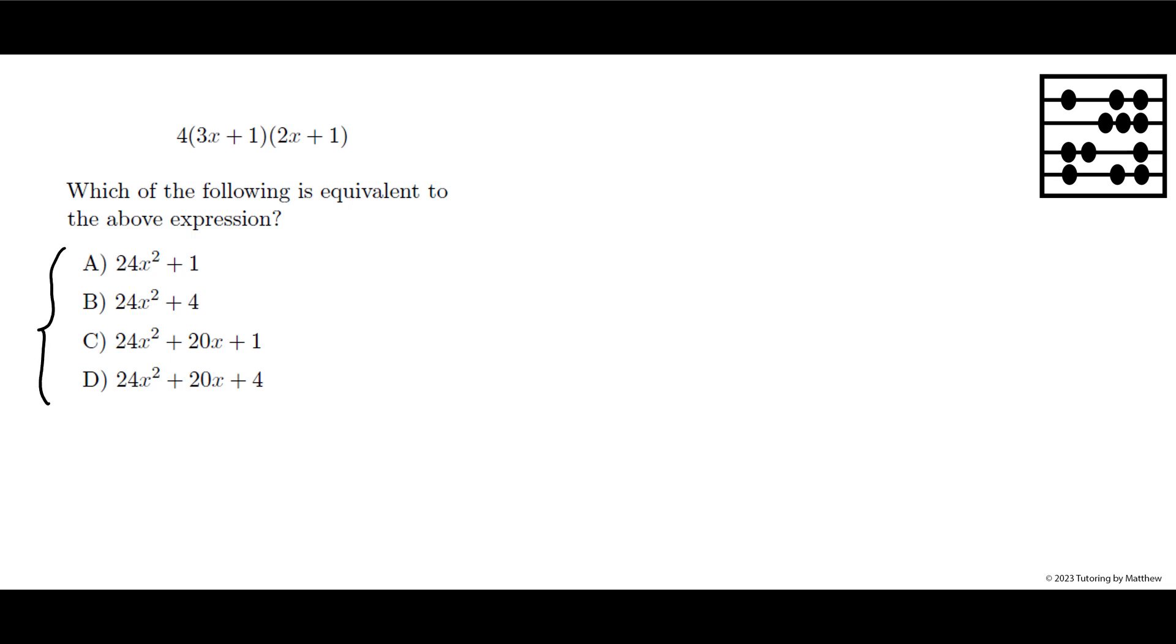When you're looking at the answer space you want to see what's the same and what's different. Notice all of the answers have 24x² in them, but some have a 1, some have a 4, some have a 20x, and some do not. Because you're looking for similarities and differences, it helps you to know what to do.